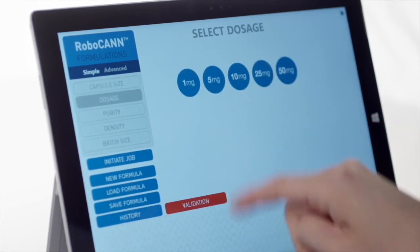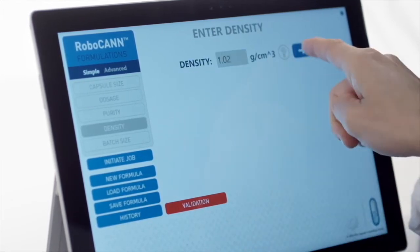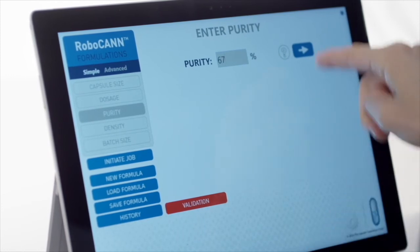The Robo LQ accounts for all formulation factors, including product density and purity, reducing error while also saving time.